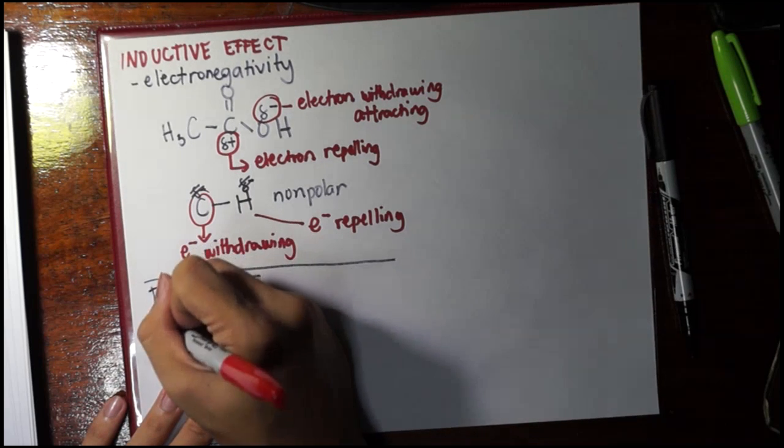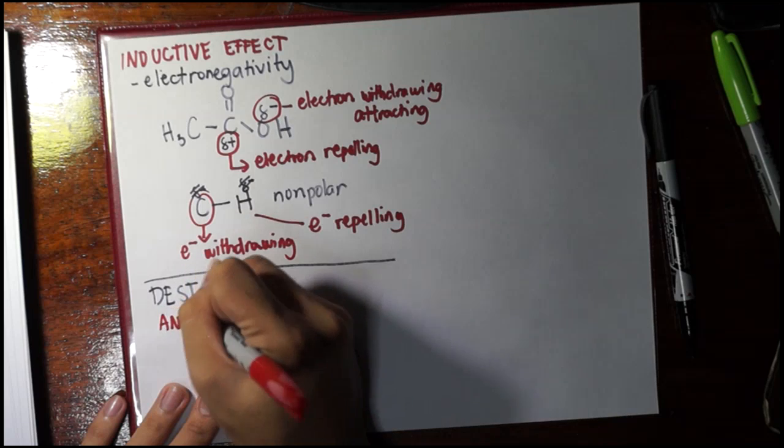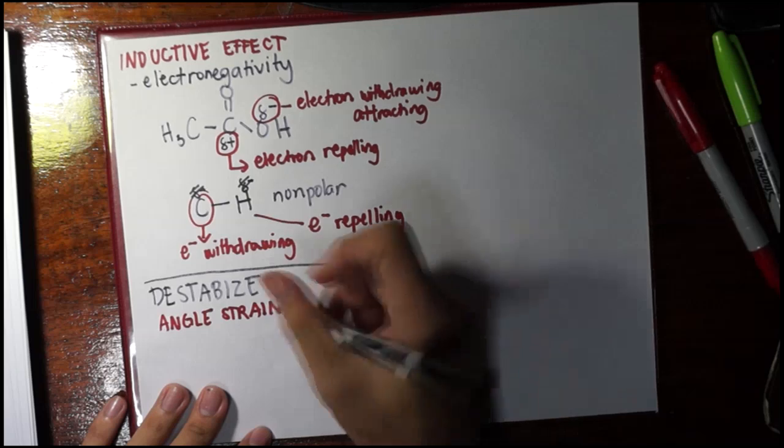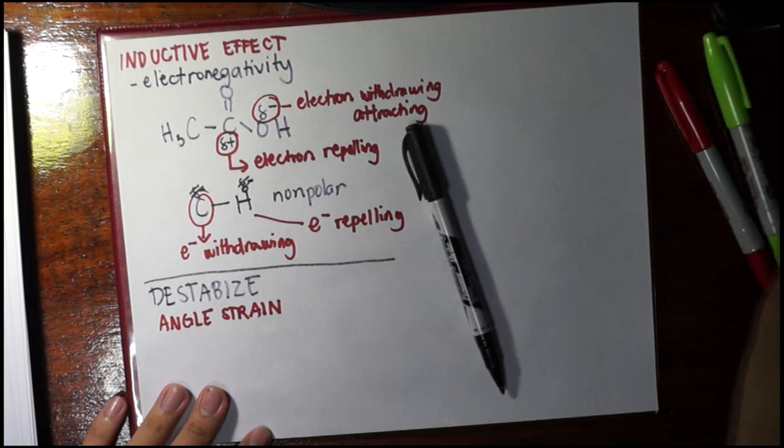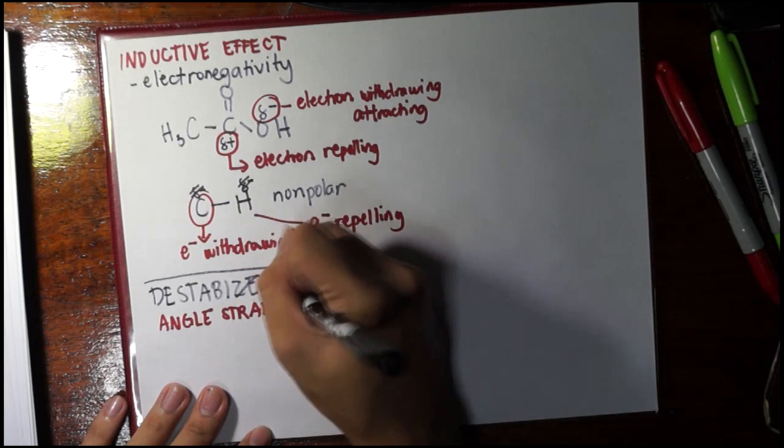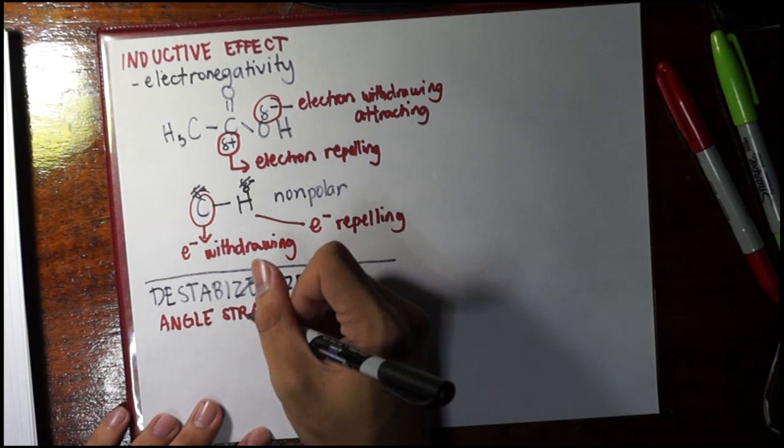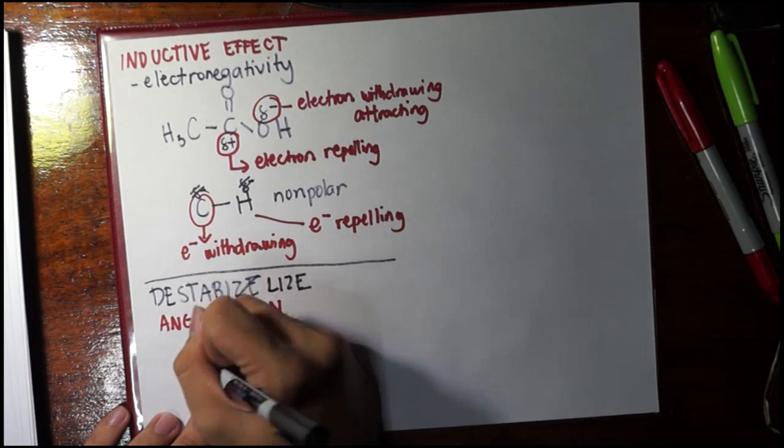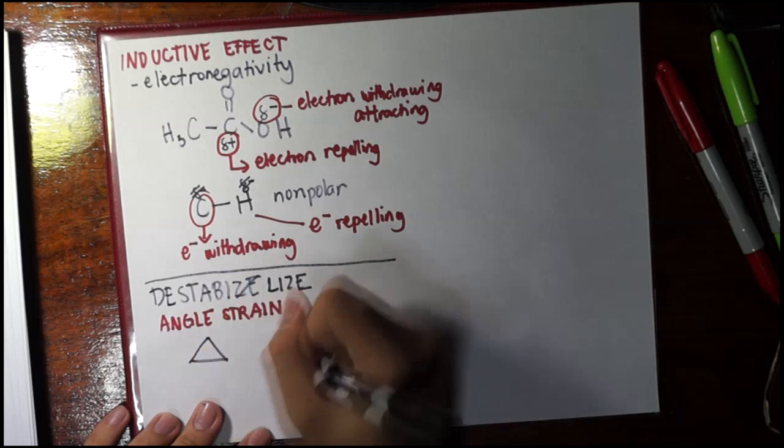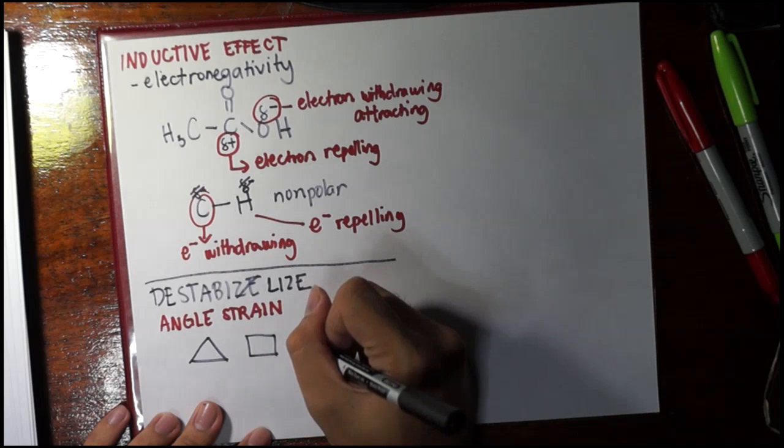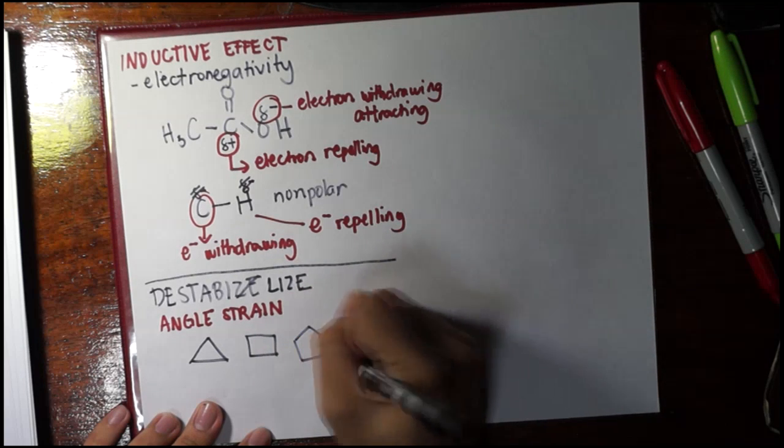The first one I would like to mention is angle strain, probably the simplest of them. This is destabilized. Angle strain exists in rings. For example, I draw cyclopropane, cyclobutane, and cyclohexane.